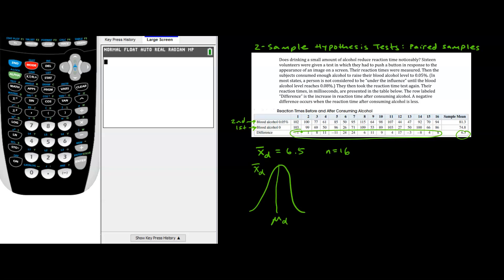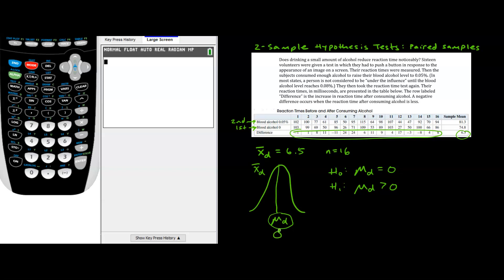In order to answer our question — does alcohol reduce reaction time — we do that through a hypothesis test. My null hypothesis is that there is no change or no difference in reaction time in the population before and after alcohol, so the average difference in reaction time in the population would be equal to zero: H₀: μ_d = 0. The alternate hypothesis — the researcher's hypothesis — is that there is some positive difference in reaction time. But remember, whenever we do a hypothesis test, we always assume the null hypothesis to be true. So if we assume μ_d = 0, then our observed sample mean of 6.5 would be way out in the extreme tail.